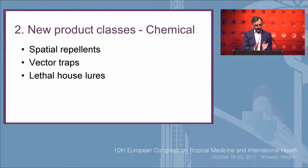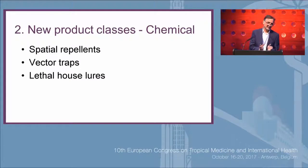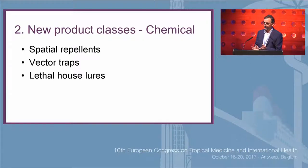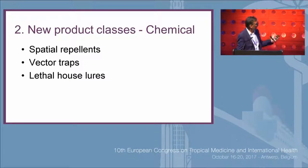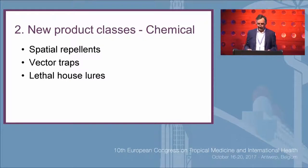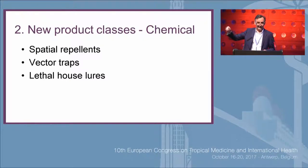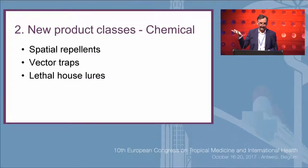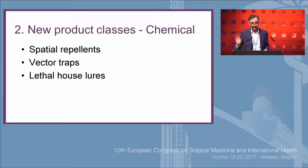Now I want to look at development of chemicals which are outside the norm. There are three different categories: spatial repellents — a tab placed on the wall releases an active ingredient providing protection within a house, repelling mosquitoes from entering that odour arena. Second, vector traps and lethal house lures, which I'll discuss in more detail.